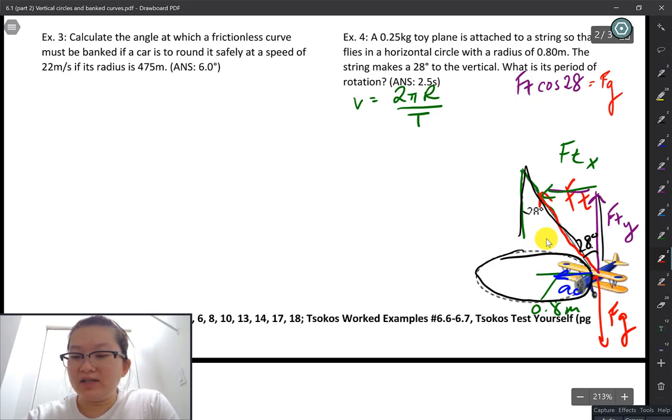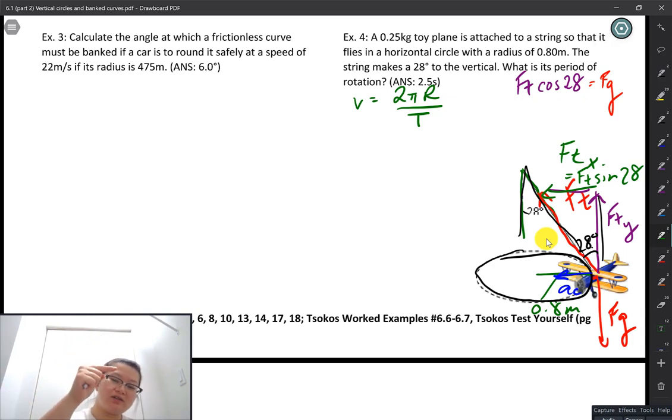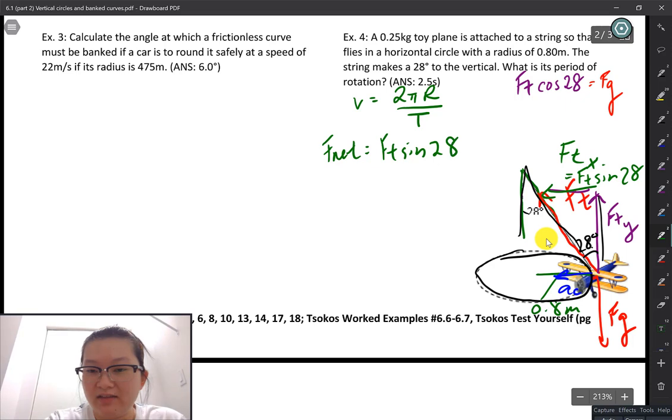The other component, F_Tx, this is F_T sine of theta, or 28 degrees. This one is going to be pointing towards the center of the circle, providing the F_net for the centripetal acceleration. So F_net here is going to be F_T sine 28, and that's going to be equal to the mass times the centripetal acceleration of the plane.